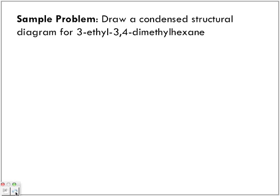So here's a sample problem. Draw a condensed structural diagram for 3-ethyl-3,4-dimethylhexane. So let's go through this. You can pause this and try it out yourself or we'll continue. So remember the main chain is hexane, so we know we're going to have six carbons in a chain. So we're going to draw them in a straight chain.